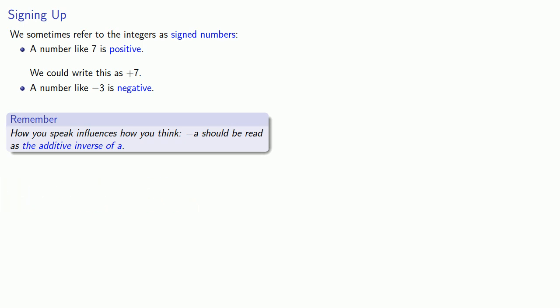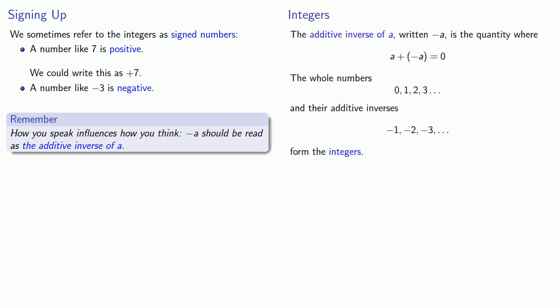But remember the important property of this number is that it is an additive inverse. If we add it to a, we get zero. And so it's helpful to read this as the additive inverse of a, and not as negative a.